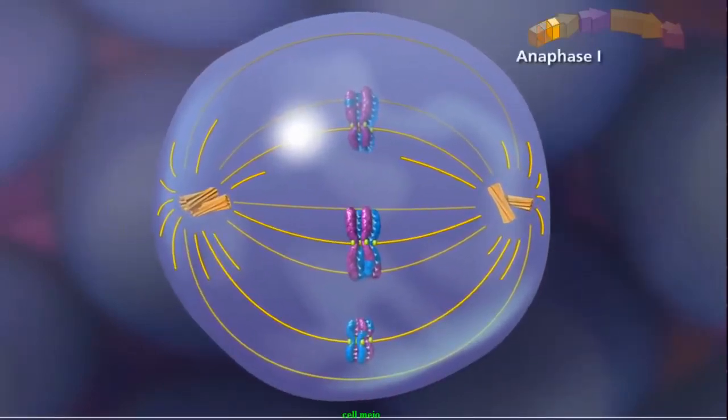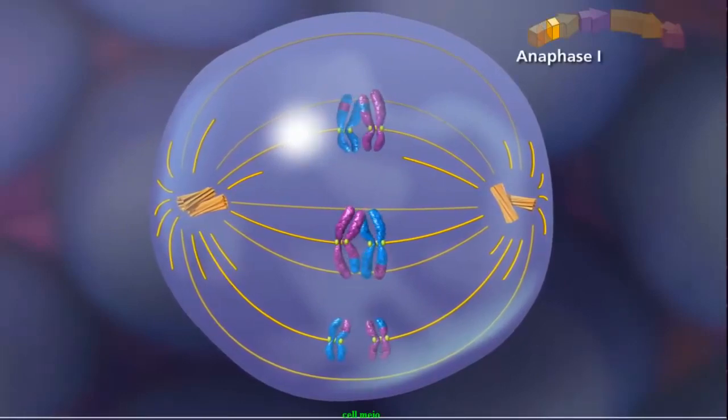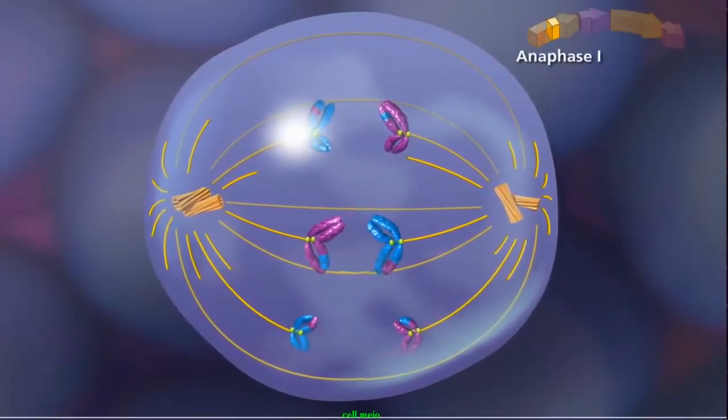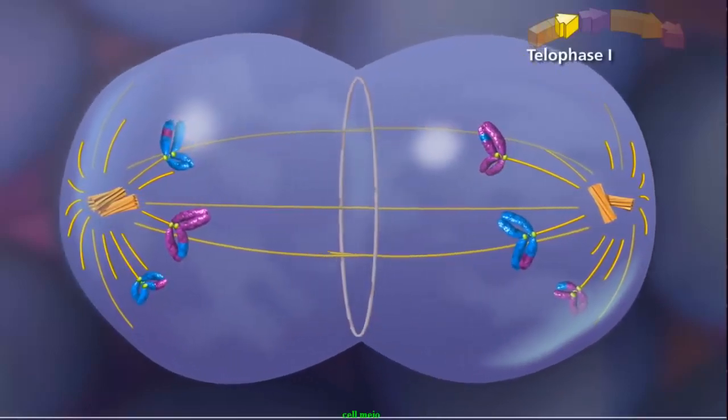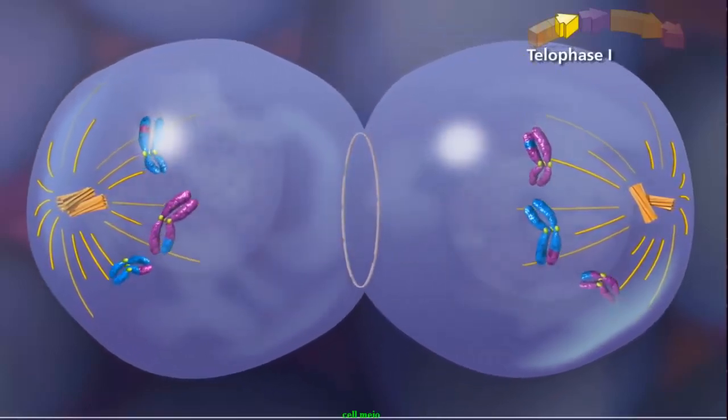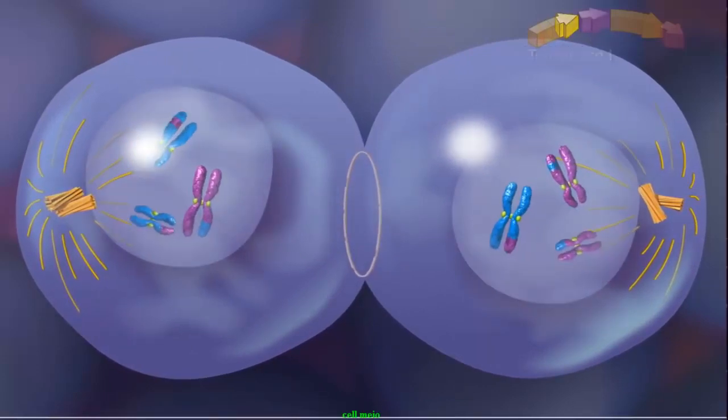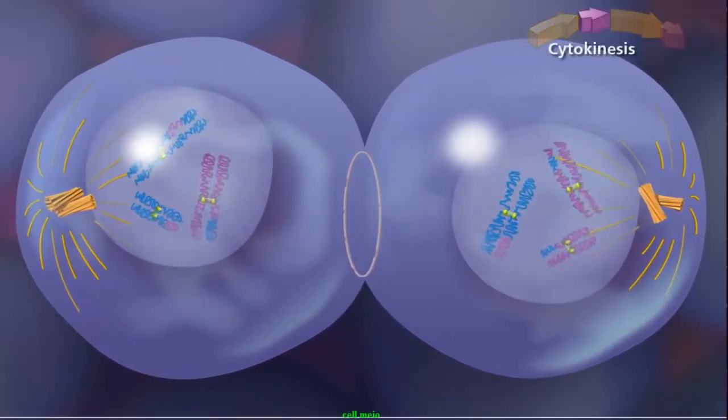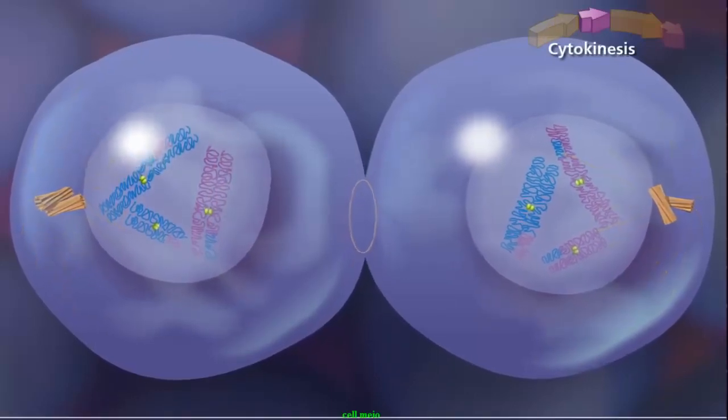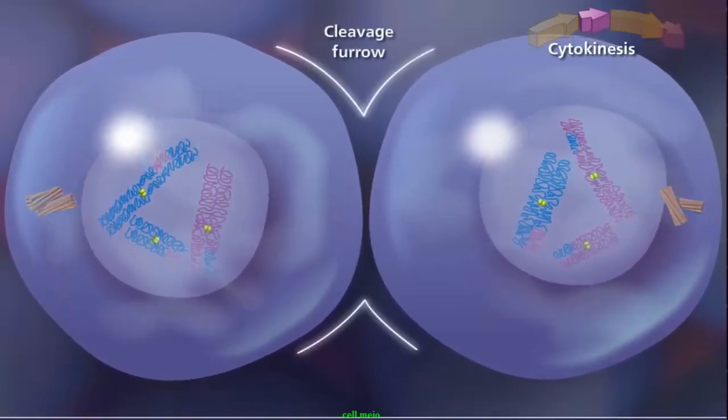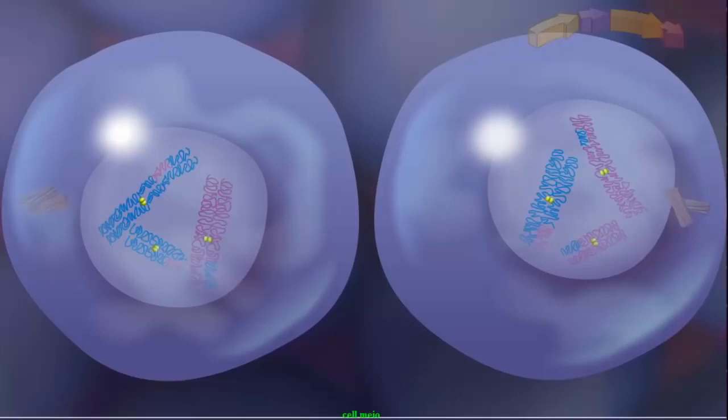In anaphase I, the homologous chromosomes separate and move toward opposite poles. Meiosis I ends with telophase I, when the chromosomes decondense and the nuclear envelope reforms. Cytokinesis separates the cytoplasmic material and the two daughter cells are separated by a cleavage furrow.